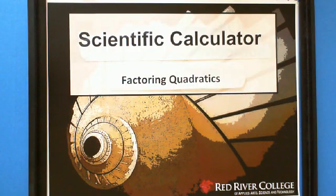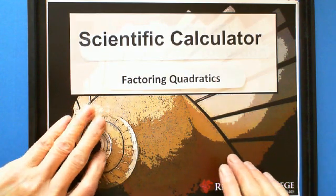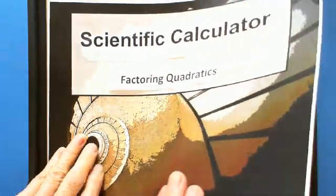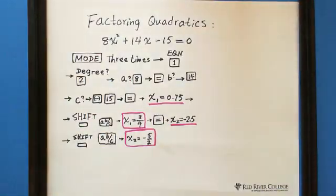Hi, factoring quadratics using scientific calculator. This is an example: factoring quadratics for 8x squared plus 14x minus 15 equals 0.